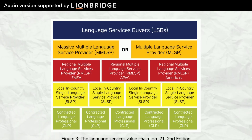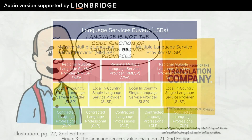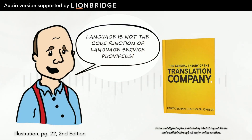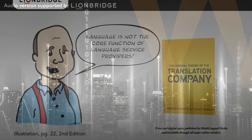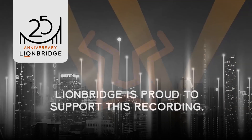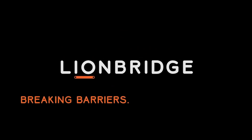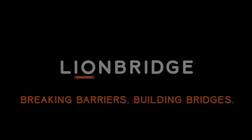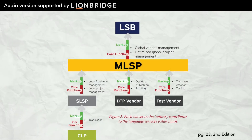Moving on from Figure 3, we need to clarify one thing up front. LSPs do not provide translation. They provide vendor management, project management, and sales. This may come as a shock to you. You may then ask why one would hire a Language Services company to provide translations if that is not even their core competency. The answer is because the industry is structured in such a way that each of those middlemen, or LSPs, add necessary value. As we can see in Figure 5, each company in the chain adds value through its core functions.